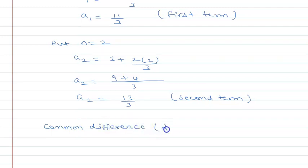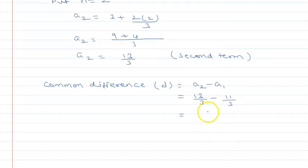Common difference d = a2 - a1 = 13/3 - 11/3 = (13 - 11)/3 = 2/3.